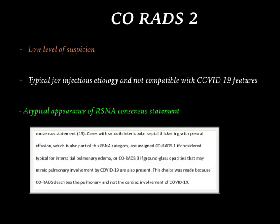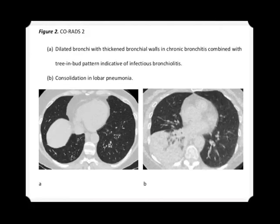Coming to CORADS 2, low level of suspicion — features typical for infectious etiology but not compatible with COVID-19 features. This comes under the atypical appearance of the RSNA consensus statement. A classical example is dilated bronchi with thickened bronchial walls in chronic bronchitis combined with the train-butt pattern, indicative of infectious bronchiolitis not specific for COVID-19, and consolidation in lobar pattern also comes under CORADS 2.